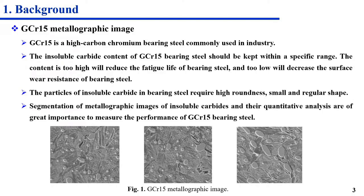Let me introduce the background of GCR-15 bearing steel metallographic image. GCR-15 is a high carbon chromium bearing steel commonly used in industry. The insoluble carbide content of GCR-15 bearing steel should be controlled within a specific range. The particles of insoluble carbide in bearing steel require high roundness, small and regular shape. Segmentation of metallographic images and their quantitative analysis are of great importance to evaluate the performance of GCR-15 bearing steel.